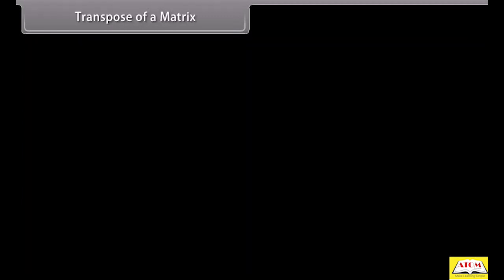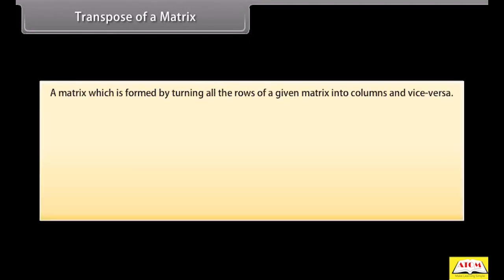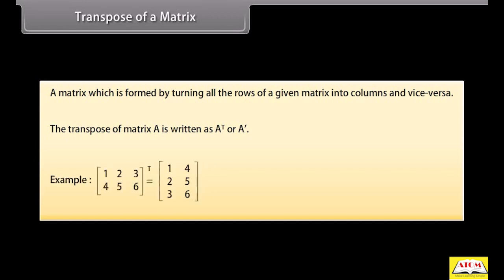Transpose of a matrix: A matrix which is formed by turning all the rows of a given matrix into columns and vice versa. The transpose of matrix A can be written as A'. For example, the transpose of matrix with first row 1, 2, 3